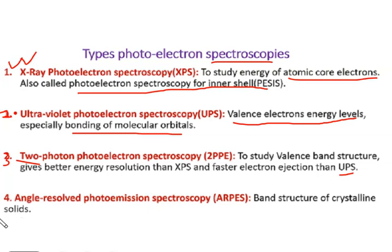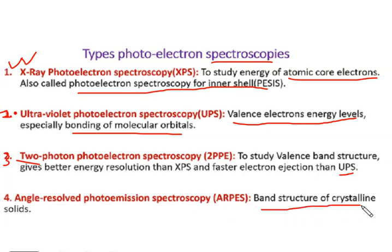The fourth one is angle-resolved photoemission spectroscopy, which is used for the study of band structure of crystalline solids. These are the four types of photoelectron spectroscopies.